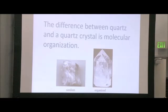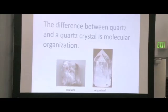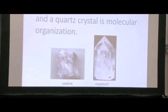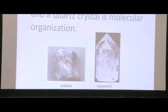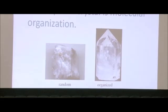you would actually be able to see that there's a spiral created, just like your DNA helix. The difference between quartz and a quartz crystal is all about molecular organization. On the left here, you see a piece of quartz, but on the right, you see a quartz crystal. It's all silicon dioxide, but what happens when those molecules organize in that pattern is what makes a crystal a crystal.